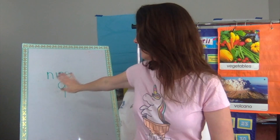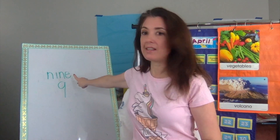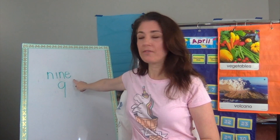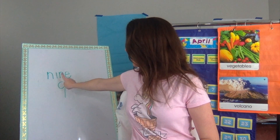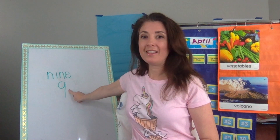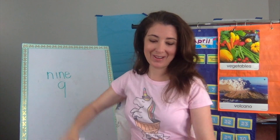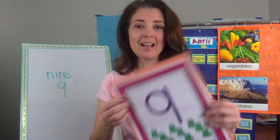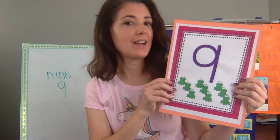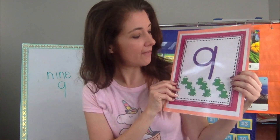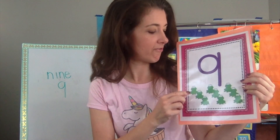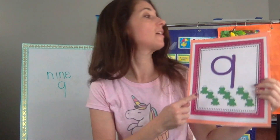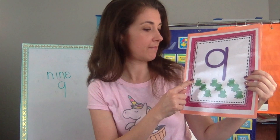So this is the number nine. This is the word for nine: N-I-N-E, and this is the number nine. I'm going to show you my number nine I have here. It has nine frogs. Let's count the frogs together.